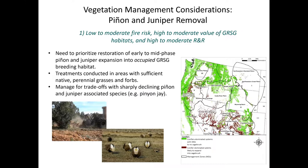In areas with low to moderate fire risk, high to moderate value greater sage-grouse habitat, and high to moderate resilience and resistance, management actions should include prioritization of restoration of early- to mid-phase pinion and juniper expansion, especially where pinion and juniper have expanded into currently occupied greater sage-grouse breeding habitats. Treatments should be conducted in areas with sufficient native perennial grasses and forbs, and we also need to manage for trade-offs with sharply declining pinion and juniper-associated species, such as the pinion jay.